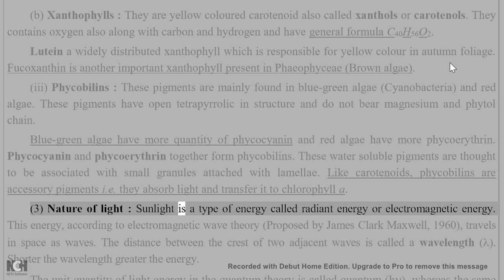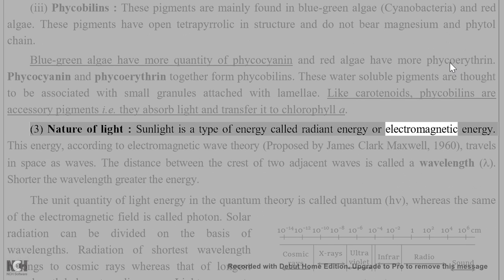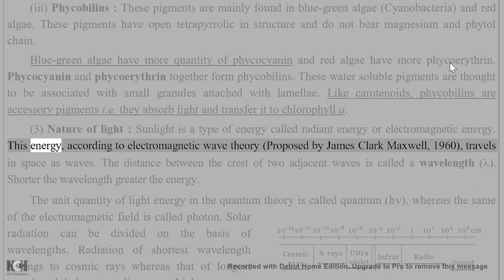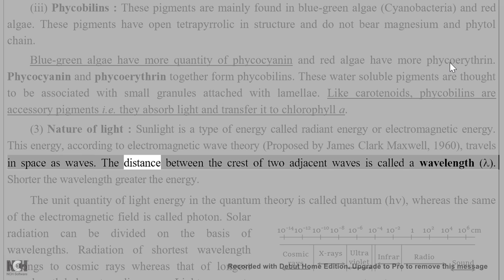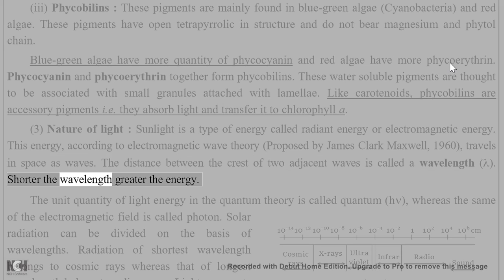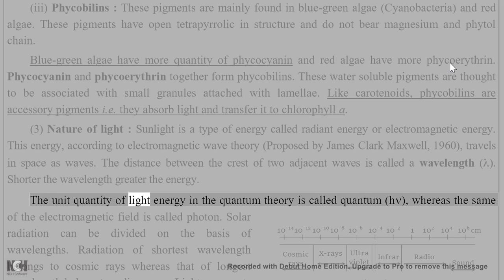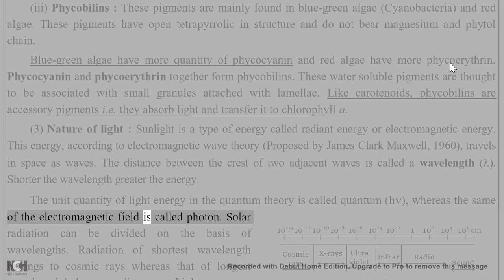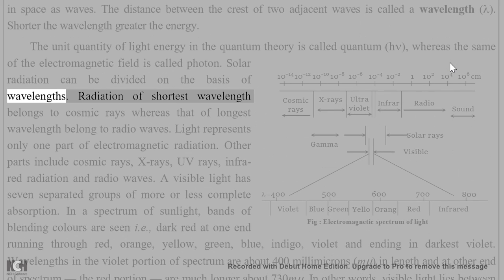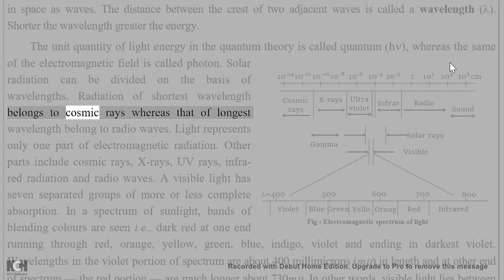Sunlight is a type of energy called radiant energy or electromagnetic energy. According to the electromagnetic wave theory proposed by James Clerk Maxwell (1860), this energy travels in space as waves. The distance between the crests of two adjacent waves is called a wavelength. Shorter the wavelength, greater the energy. The unit quantity of light energy in quantum theory is called a quantum, whereas the same unit of the electromagnetic field is called a photon. Solar radiation can be divided on the basis of wavelengths, from shortest wavelength cosmic rays to longest wavelength radio waves.